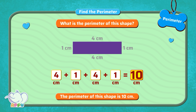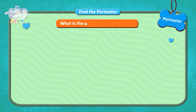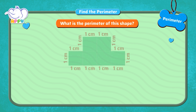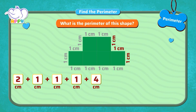Outstanding! What is the perimeter of this shape? To find the perimeter, we need to find the total length of the sides of the shape. Two centimetres plus one centimetre plus one centimetre plus one centimetre plus four centimetres plus one centimetre plus one centimetre, which is equal...